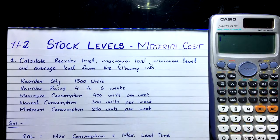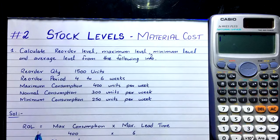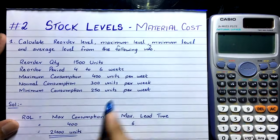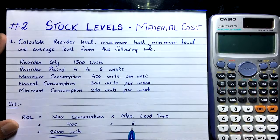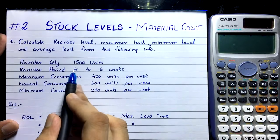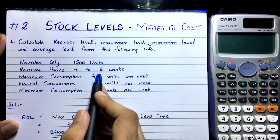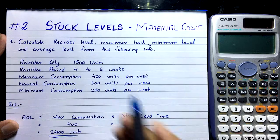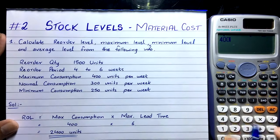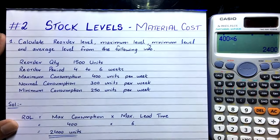First we calculate the reorder level. The formula is: Reorder Level = Maximum Consumption × Maximum Lead Time. Maximum consumption is 400 units per week. The reorder period ranges from 4 to 6 weeks, so 4 is the minimum lead time and 6 is the maximum lead time. We take 6 as the maximum lead time.